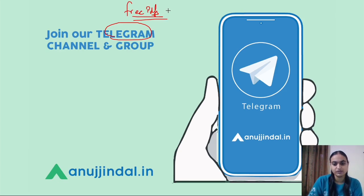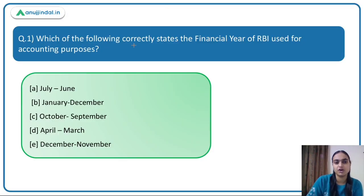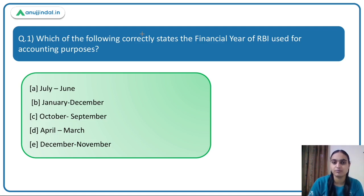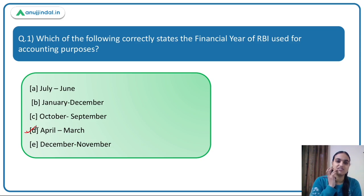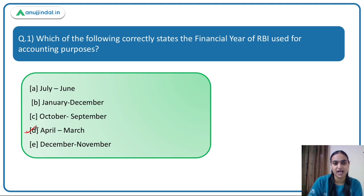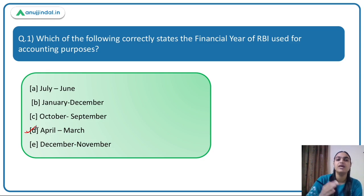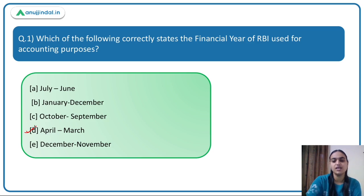The first question asks which financial year RBI uses for accounting purposes. Recently, RBI's financial year was changed — earlier it was July to June, and it was changed to April to March. The answer is Option D. This is relevant because the report being discussed covers a nine-month period up to March, due to that change in the financial year.